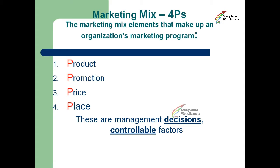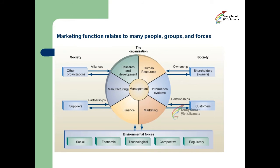The marketing mix elements — product, promotion, price, and place — make up an organization's marketing program. These are management decisions and controllable factors. Marketing functions relate to many groups: human resources, information systems, marketing, finance, manufacturing, and research and development. Human resources and information are channelized to customers, shareholders, and relationships.